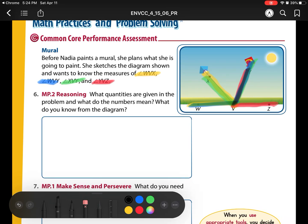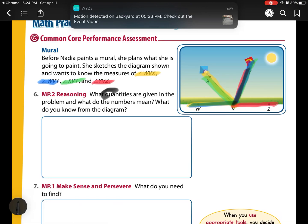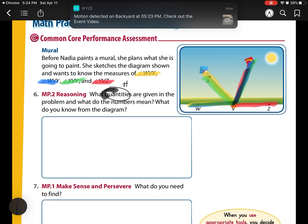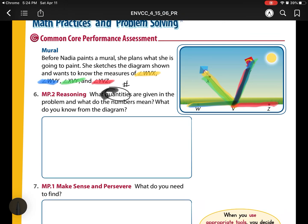What quantities are given in the problem? And what do the numbers mean? What do you know from the figure? So remember, quantities are numbers. So it's asking us, what numbers do they give us already? And the answer is none. They don't give us any numbers. So no quantities are given.